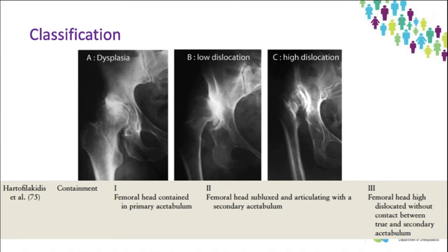The Hartofilakidis classification assesses containment of the femoral head by the acetabulum and is classed as dysplastic type A, a low dislocation where the femoral head creates a false acetabulum just superior to the true acetabulum, and a high dislocation where the femoral head is completely uncovered and sitting superiorly and posteriorly to the true acetabulum. Both classification systems are very broad and based on dislocation/subluxation parameters; therefore, radiographic measurements are key in the diagnosis of hip dysplasia.